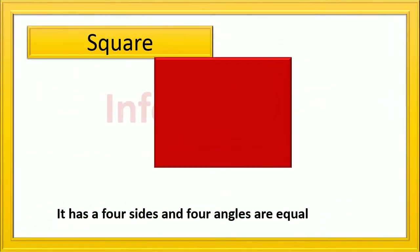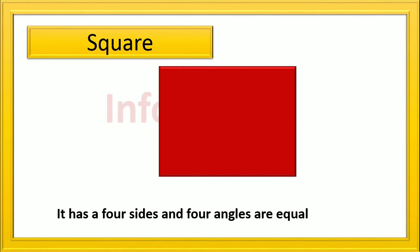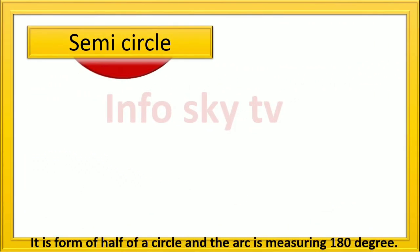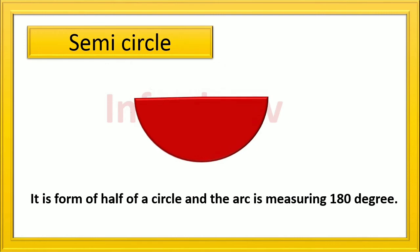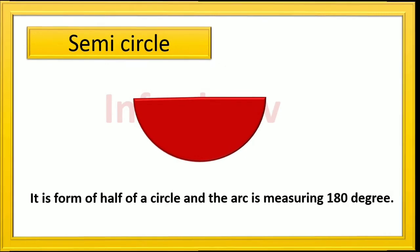Square: it has 4 sides and 4 angles are equal. Semi-Circle: it is formed of half of a circle and the arc is measuring 180 degree.